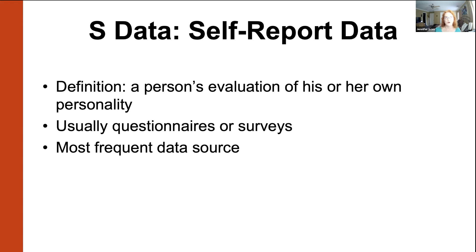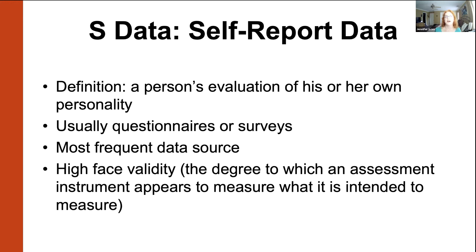You don't have to track down informants or go watch people in their daily lives. You can get self-report data from many people at the same time, whereas observational data is time-consuming. For life outcome data, self-report is much easier and less expensive because you don't have to track down government records — you just ask a person. You can take the Big Five assessment in 15 to 20 minutes and know exactly what your Big Five traits are, much faster than any other source. Most research in personality has been based on self-report, which is good and bad.